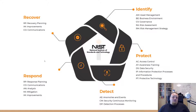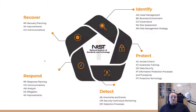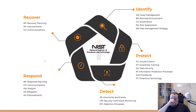Identify covers things like asset identification, governance, risk assessment, and risk management strategy — a lot of organizational work before any technical steps. Protection is more technical: awareness training, data security, access control management, information protection processes and procedures, and protective technology.